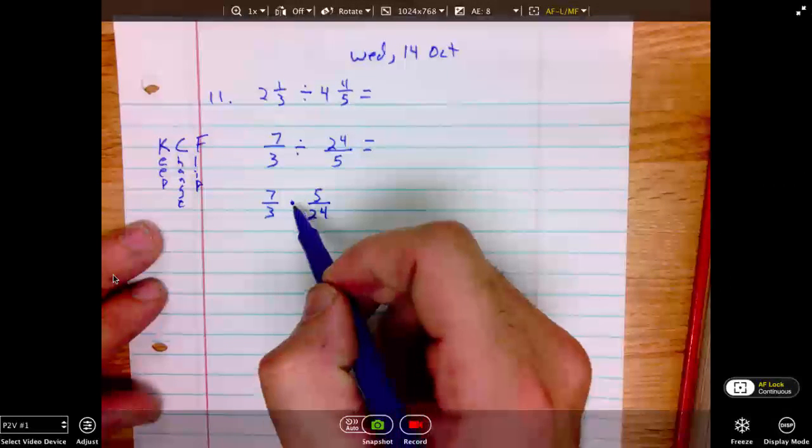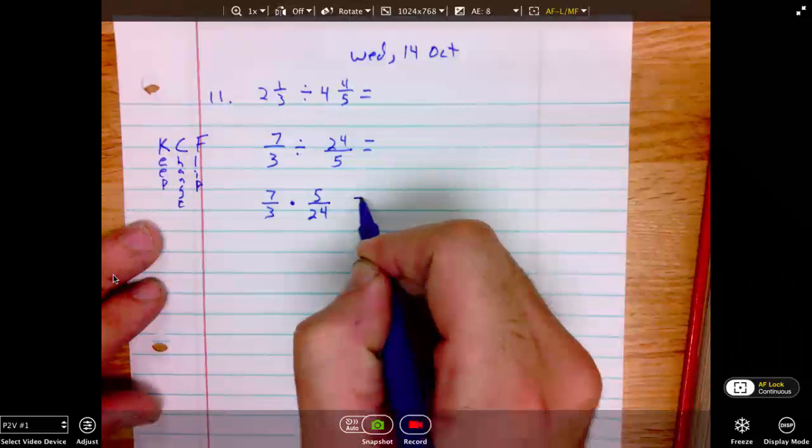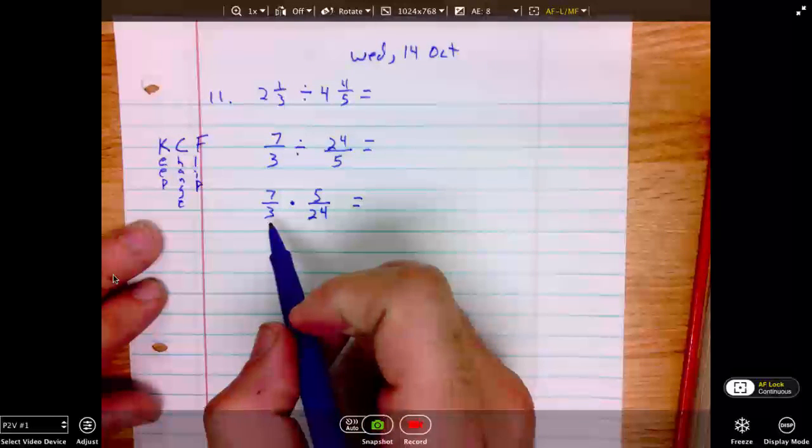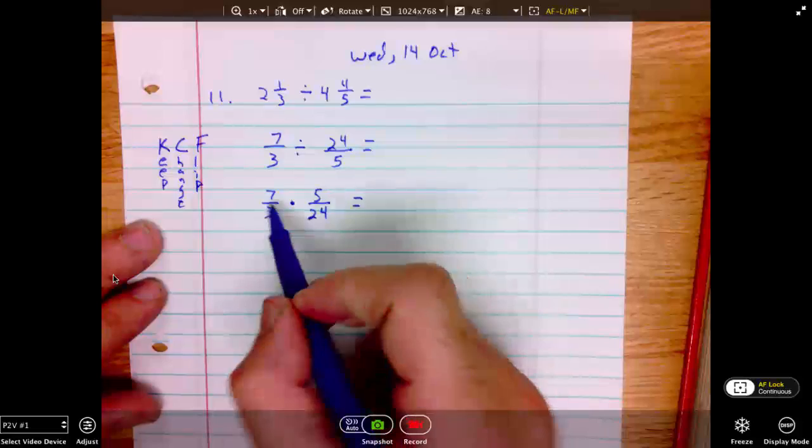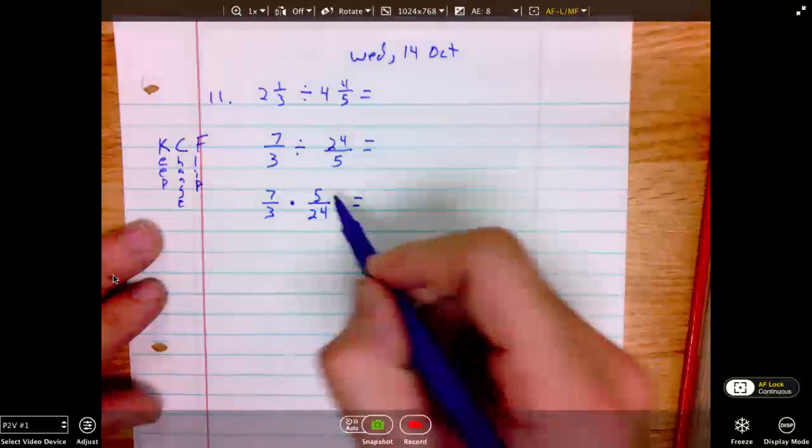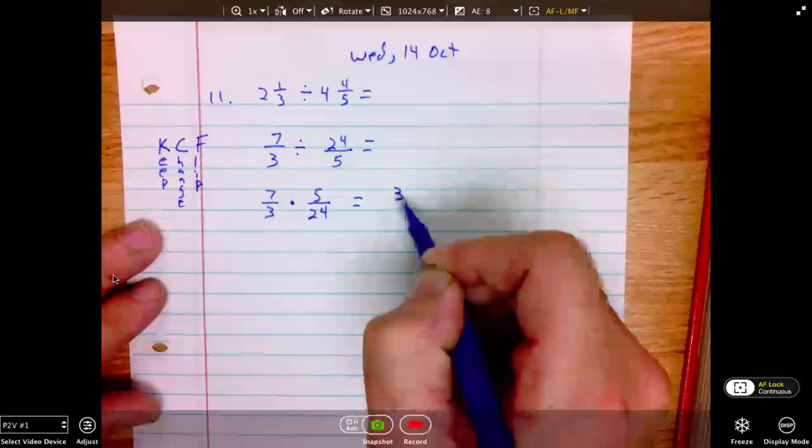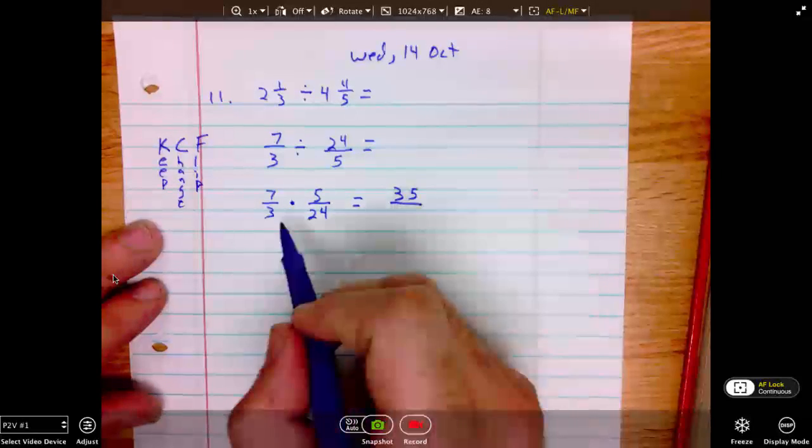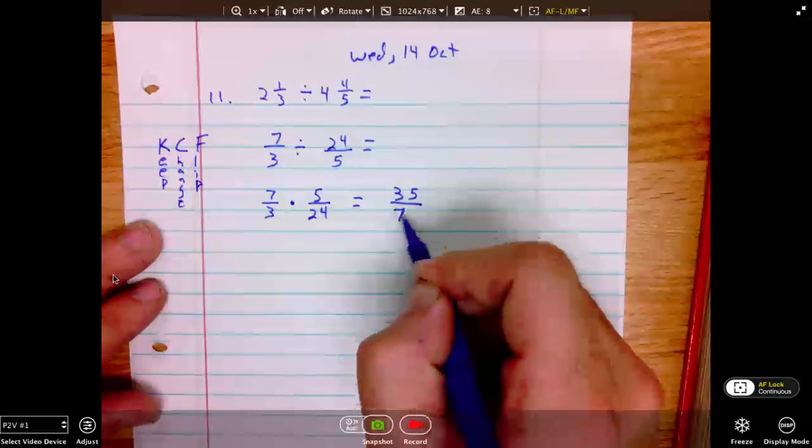Dividing is the same as multiplying by the reciprocal. Again, we seek a common factor. There are none in this case. So we can multiply straight across. 7 times 5 is 35. 3 times 24 will be 72.